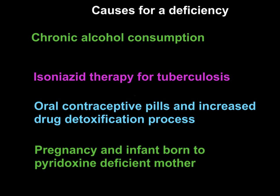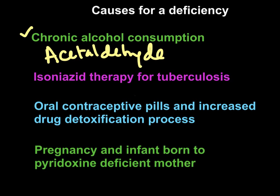Causes of vitamin B6 deficiency include chronic alcohol consumption. When alcohol is consumed, it is metabolized to acetaldehyde, which is a toxic molecule. Acetaldehyde interferes with enzymes that are bound to pyridoxal phosphate and releases PLP from the enzyme binding site, causing it to be rapidly degraded — leading to vitamin B6 deficiency.